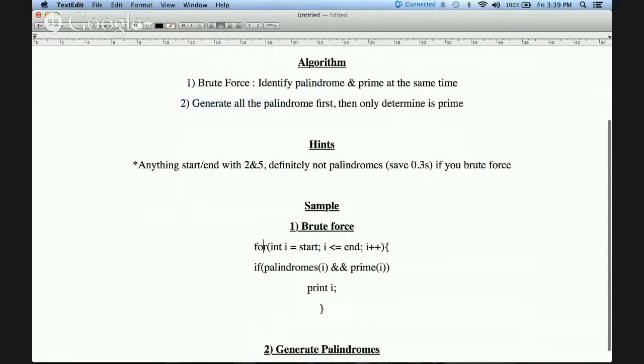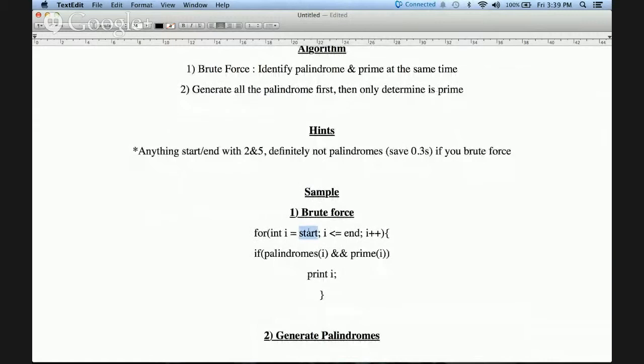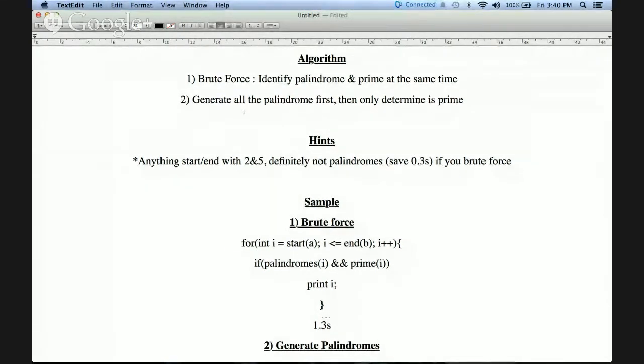So the brute force way to do it is actually something like this, so for i equal to start, which is the a in the question given, and the n is actually the b. So I use one for loop and then brute force every integer i to determine whether it is a palindrome or it is a prime or not. So if it fulfills these two conditions, then you print i. But this method that I am using is actually in the end, it gives me 1.3 seconds which exceeding the question required. So I use the second method to try it out. It obviously to get a faster performance and because if we generate all the palindrome first, we are going to save our question.